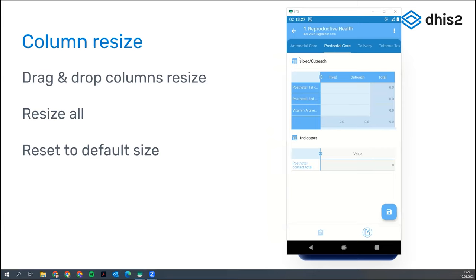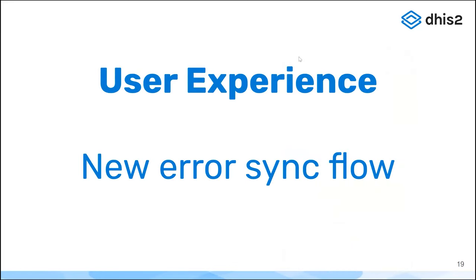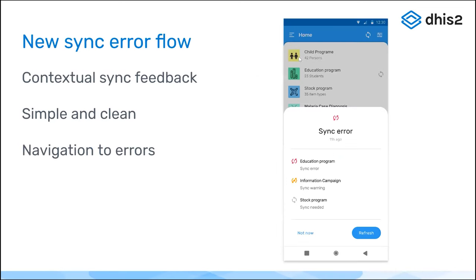Let's move to the next feature, which is the new error sync flow. We have implemented a new flow for helping the user navigate from the home screen to the particular error. We were doing this before by offering different levels of information, so the contextual sync feedback is not entirely new — we adjust the message to where the user is.